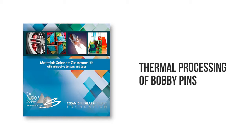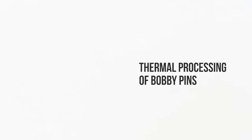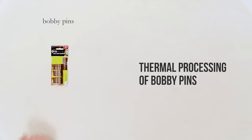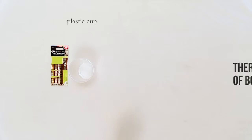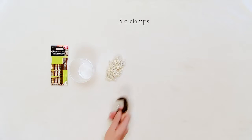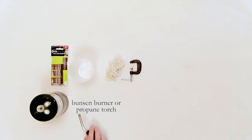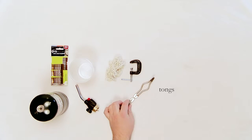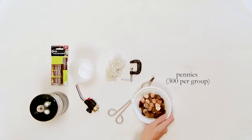The materials needed for this demonstration are 1 package of bobby pins, plastic cups with twine, 5 C-clamps, Bunsen burner or propane torch, pliers or tongs, pennies 300 per group, ruler, and a cup filled with cold water.